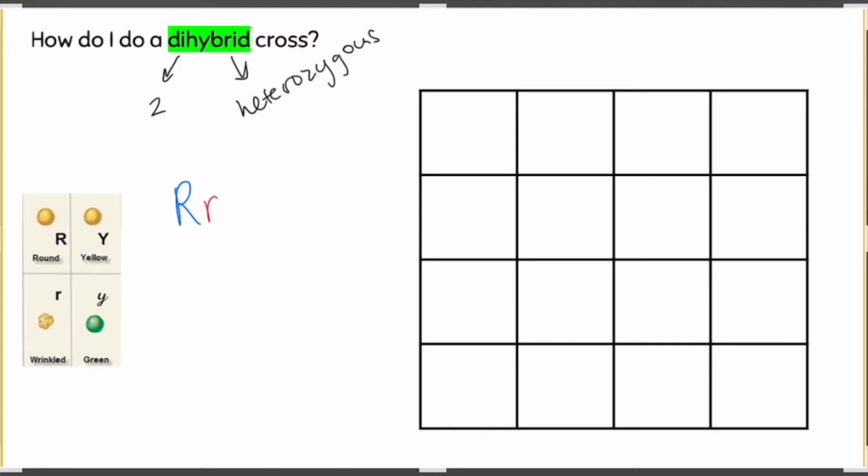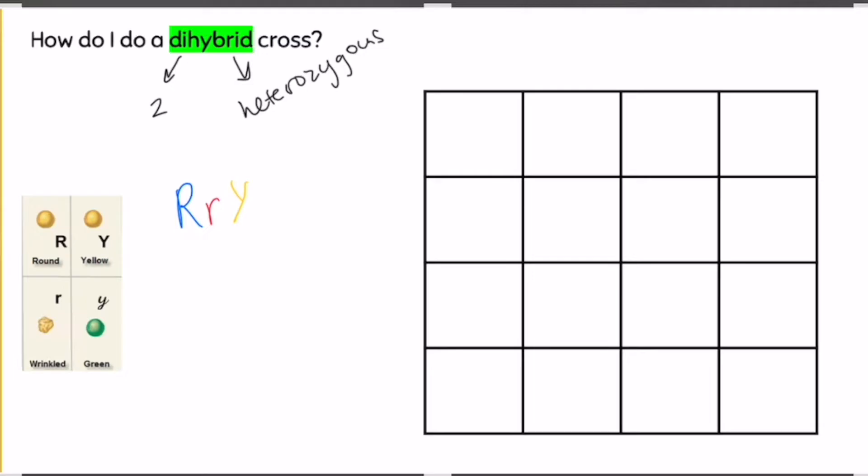For seed color, I will do a capital yellow Y. Y's are hard to tell apart, so I'm going to be careful to do my lowercase y with a little loop so that we can absolutely tell the difference. And we have two of those organisms. They're both heterozygous for both of those traits, so capital and lowercase r's again, and capital and lowercase y's again.